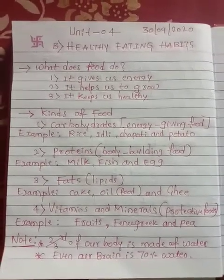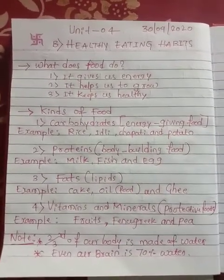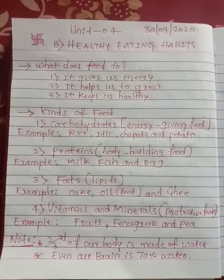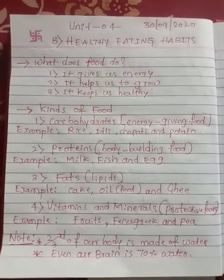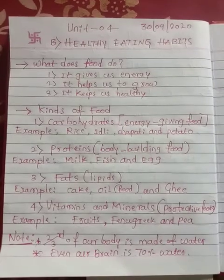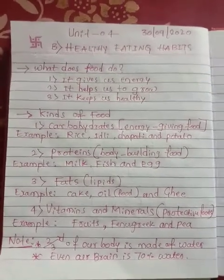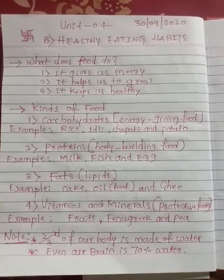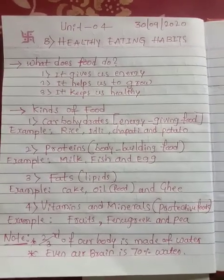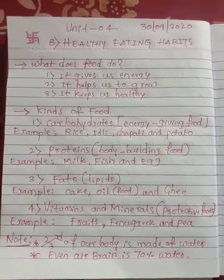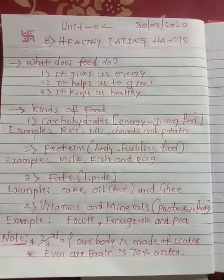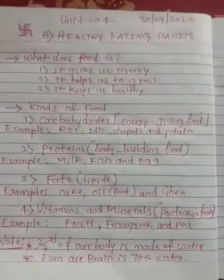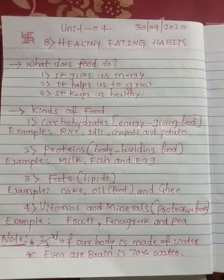Did you know, students, that all living things need food? Yes, all living things need food. And man is omnivorous — omnivorous means man eats both flesh as well as plant-based food. So man is omnivorous and we eat all types of food.